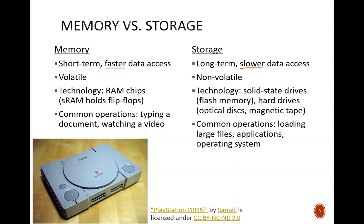Memory records things that change quickly, such as typing a document or watching a video. Storage records things that change more slowly, or are permanent, such as saving large files, or loading an operating system.